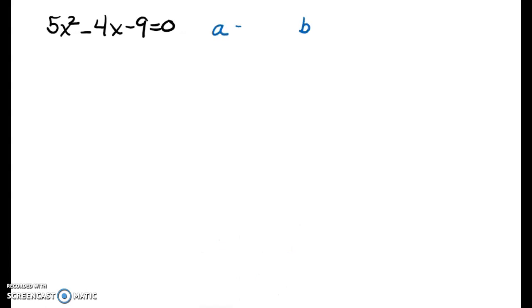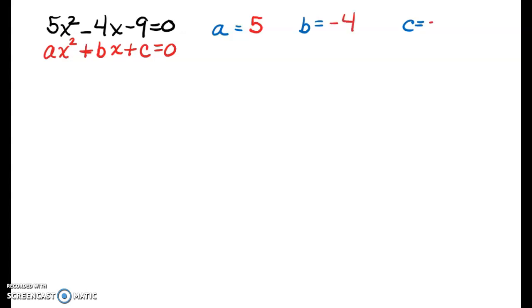This is a continuation of the video about solving quadratic equations using the quadratic formula. We're going to get straight to solving and find our values of A, B, and C. Are we in the correct form? AX squared plus BX plus C equals 0. In the last video I mentioned we could have negative values for A, B, and/or C. Up to this point we've only had problems where A is 1, but in this case A is 5, B is negative 4, and C is negative 9.